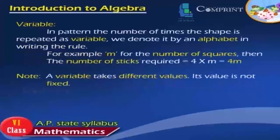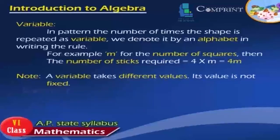Variable. In a pattern, the number of times the shape is repeated is a variable. We denote it by an alphabet when writing the rule. For example, using m for the number of squares, then the number of sticks required is equal to 4 × m, which equals 4m.